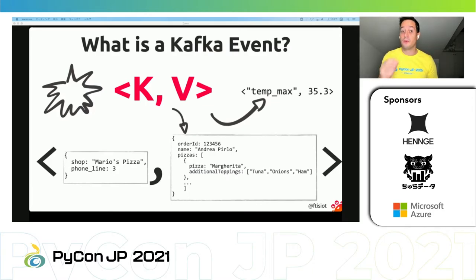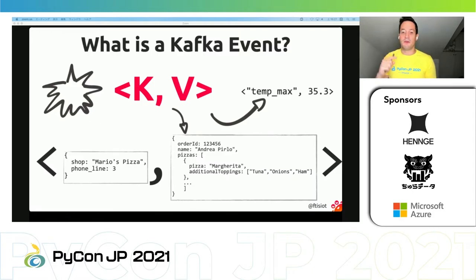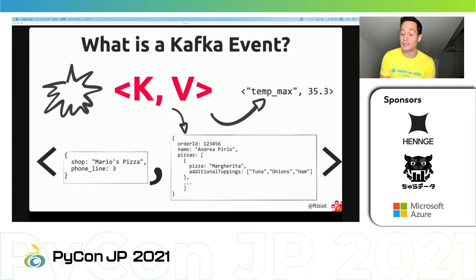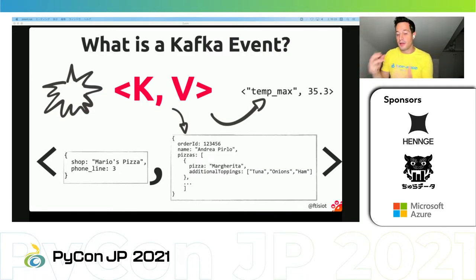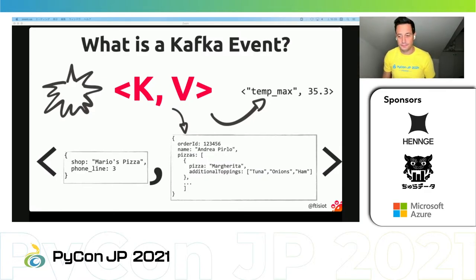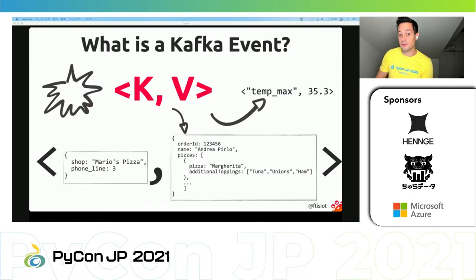You can use JSON format or other formats like Avro. For Kafka, it's just a series of bytes — Kafka doesn't really care what you put in it. Now that we understand what an event is for Kafka, it's time to understand how to write to Kafka.